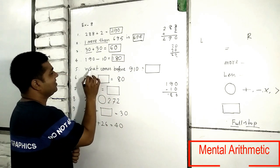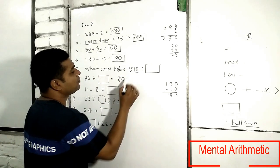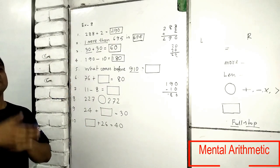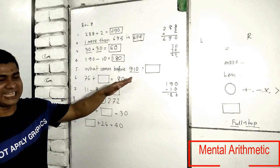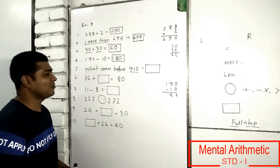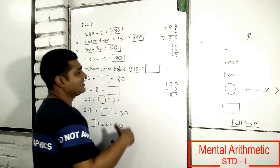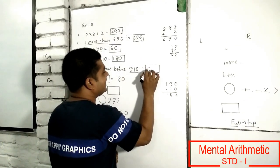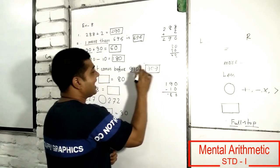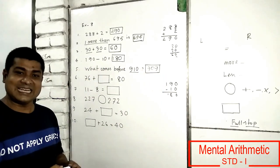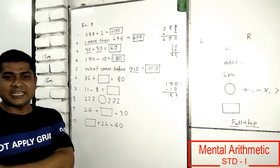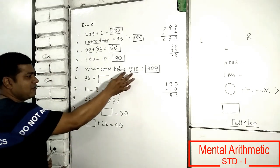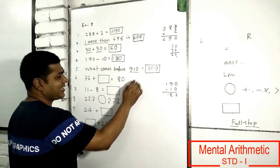Number 5: What comes before? Before means front. The front number of this 910. So what will be the front number? The front number will be 909. And next number will be 911. You have to write before. Before means front, and after means next. So I will write front number 909.